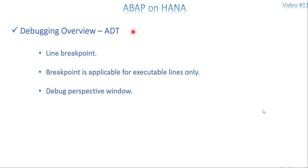A few things to understand in ADT as well: whenever there is a breakpoint we call it a line breakpoint or toggle breakpoint. Breakpoints are applicable for executable lines only — same as in ABAP, here also we have to keep a breakpoint only on executable statements, not declarative statements. The debug perspective window — normally we call it the debugging editor in GUI, but in Eclipse everything is a perspective. HANA development, ABAP development, Java development all have different perspective windows.